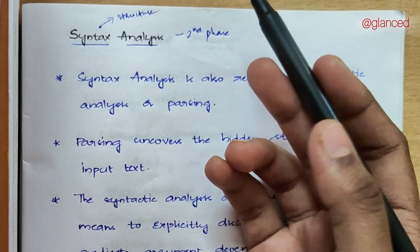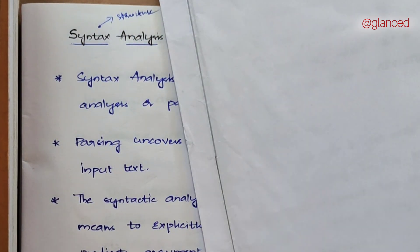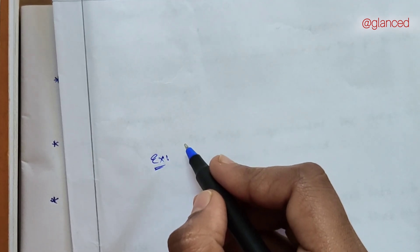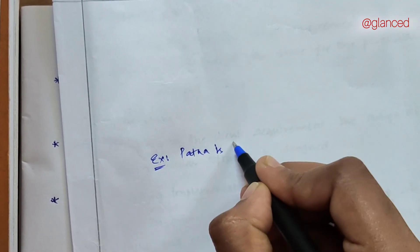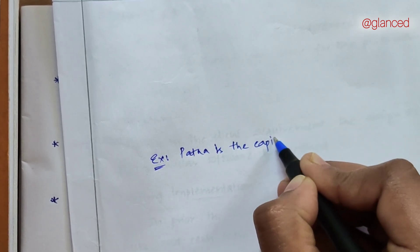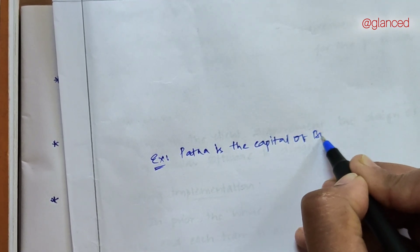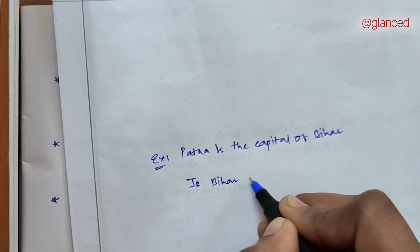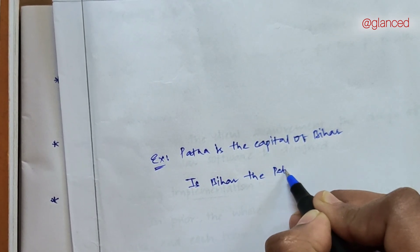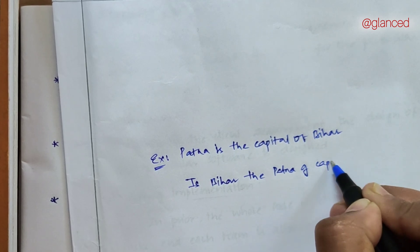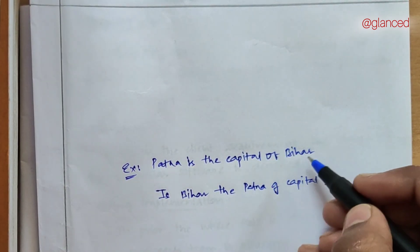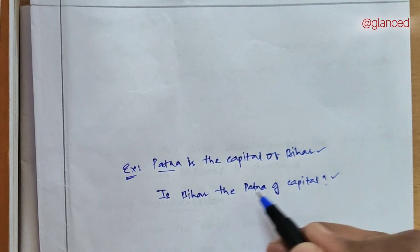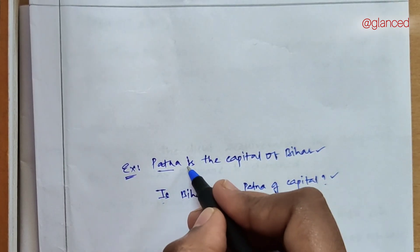Let me explain with an example. Let's take the sentence: 'Patna is the capital of Bihar.' And another sentence: 'Bihar the Patna of capital.' Both sentences have similar words — Patna, Bihar, capital, is — every word in the first sentence is present in the second sentence also.